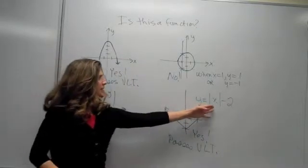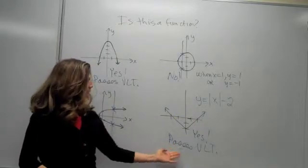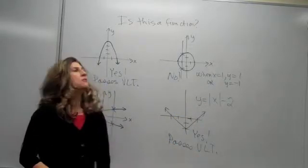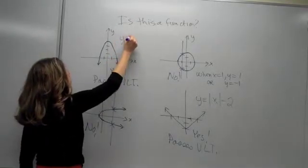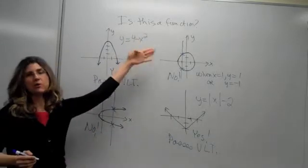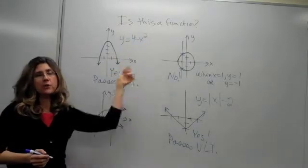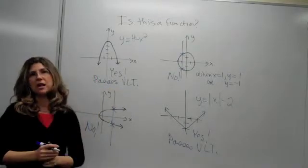Since y, for each x that we put in, we're only going to get out one y, this one will pass the vertical line test. The same thing is true for this graph. This is the graph of y equals 4 minus x squared. Any x we put in, we're going to square it, subtract it from 4, we're going to get one value of y. And thus, this passes the vertical line test.